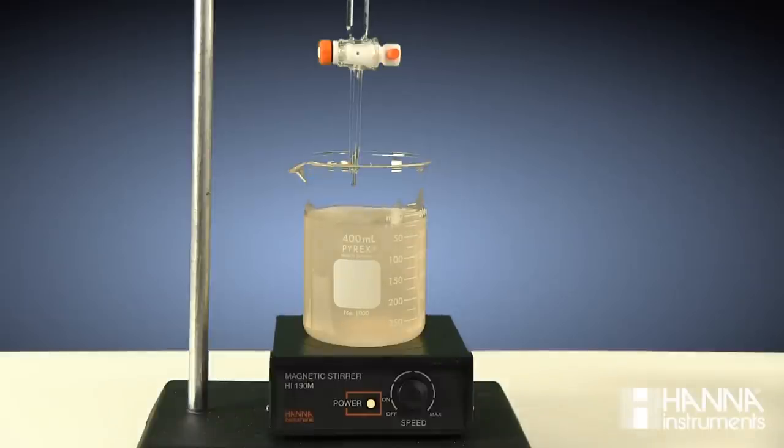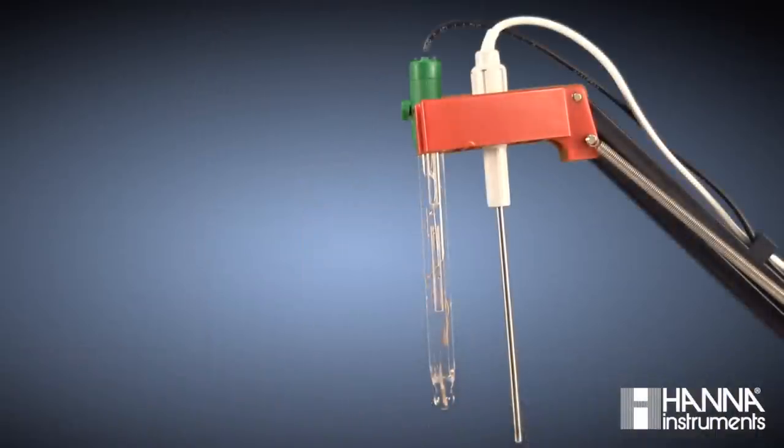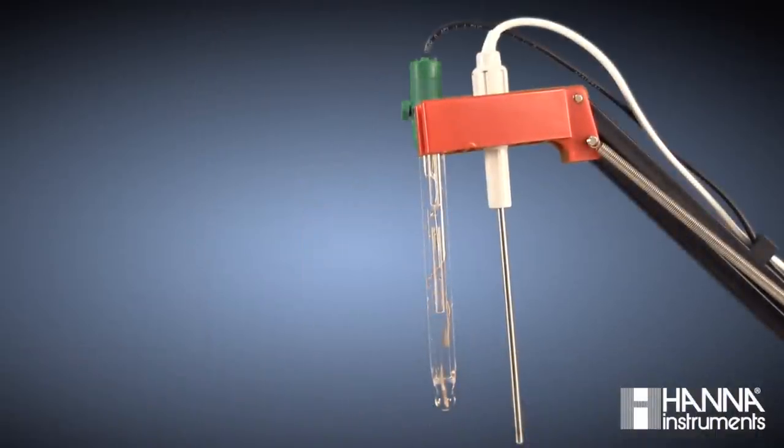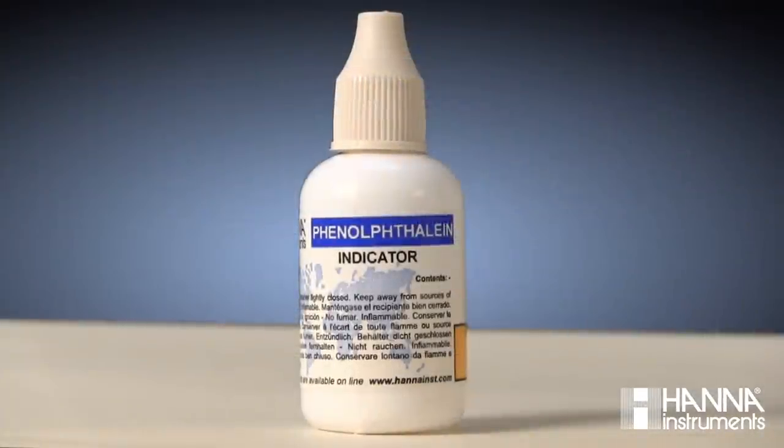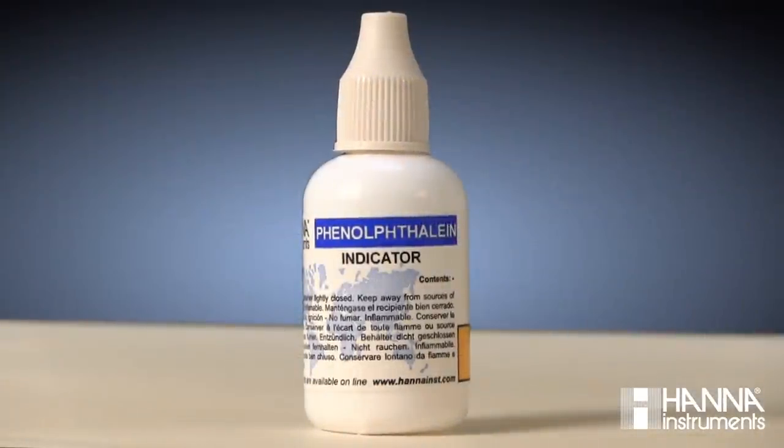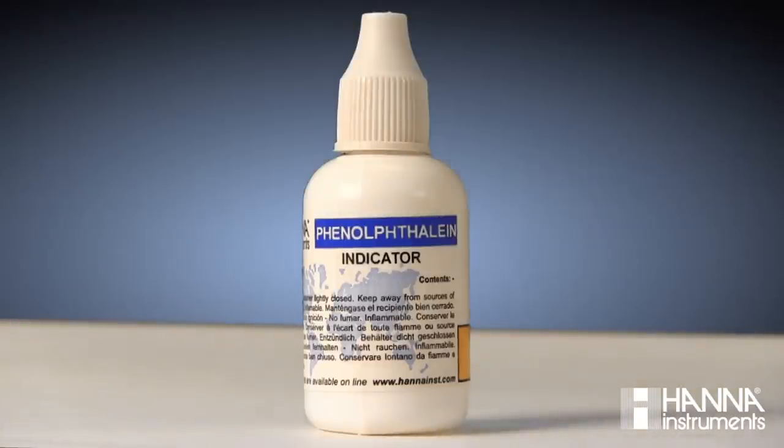We're going to be examining the two most commonly used methods for endpoint determination in a manual titration. These are potentiometrically, with a pH electrode and pH meter, and using a color indicator, which today is phenolphthalein. This method has an endpoint of pH 8.2, which coincides with the point that phenolphthalein changes from a colorless liquid to a pale pink.